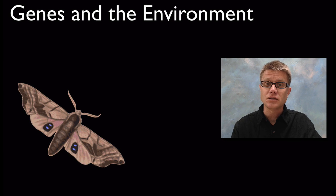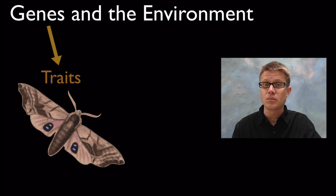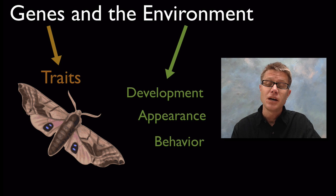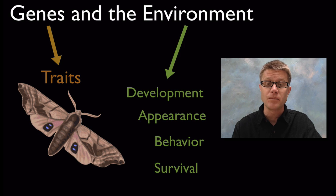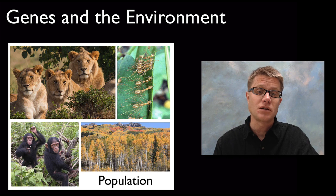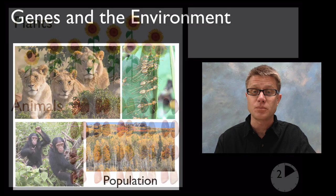The two important things that shape an organism are going to be the genes. The genes determine the traits, for example of this moth. But it's also going to be the environment. The environment can shape those traits, affect development, the appearance of an organism, its behavior, and even its survival over time. Genes and environments work together to make variation. Those are the two things that contribute to variation in populations like these lions, ants, chimps and aspen trees.